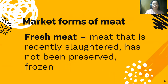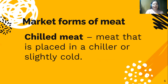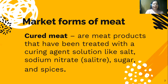Now let's move on to the market forms of meat. The first one is called fresh meat — meat that is recently slaughtered and has not been preserved or chilled. Next is chilled meat, which is meat placed in a chiller or slightly cooled. The next market form is called cured meat, which has been treated with a curing solution like salt, sodium nitrate, sugar, and spices.